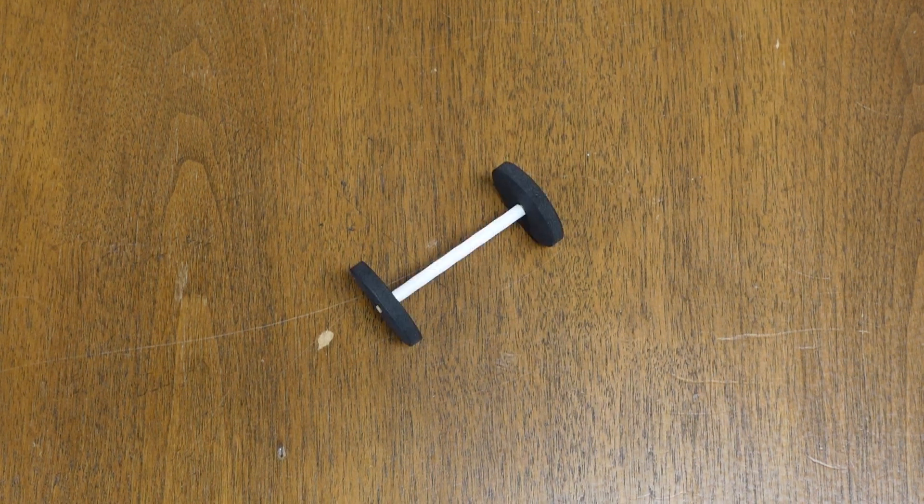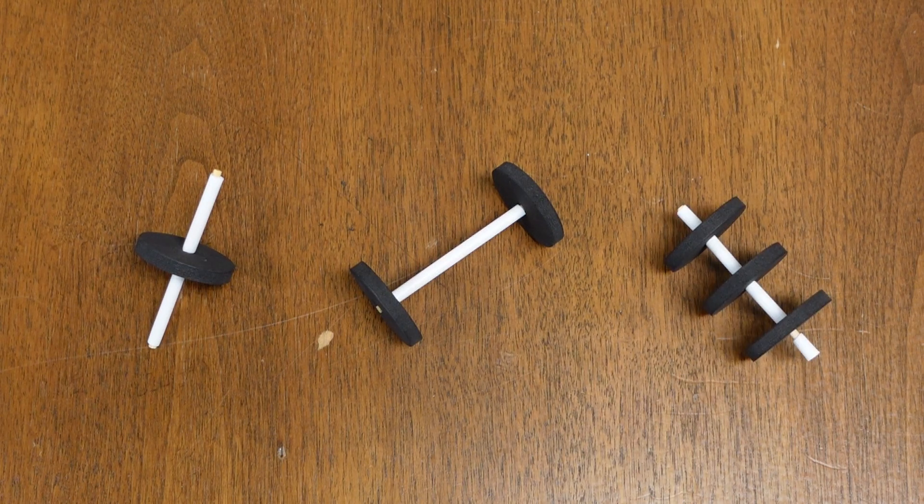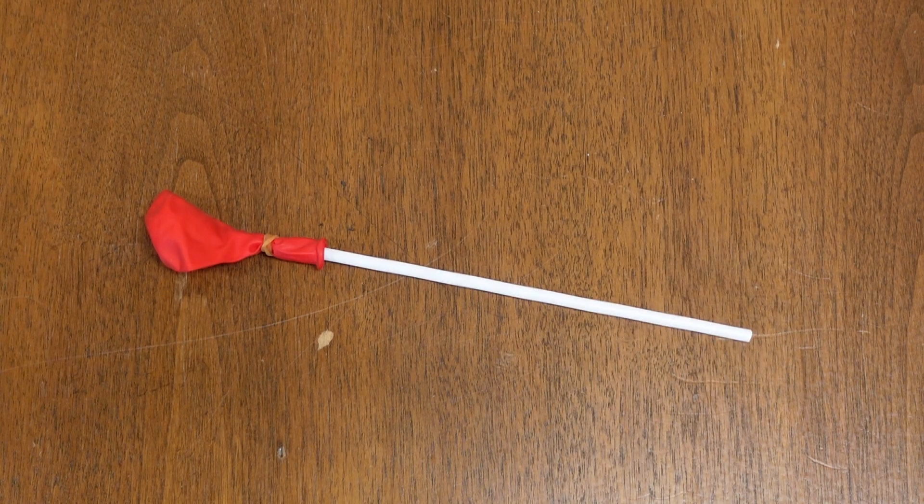What makes the Cokesbury Steam Car Craft go? An axle with wheels, whether that's two wheels, one wheel, three wheels, or more, and a balloon straw propeller. Let's make one.